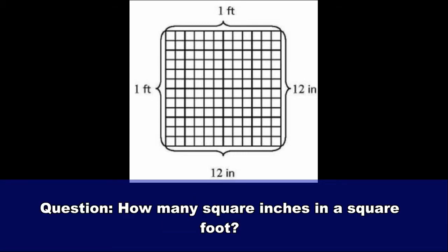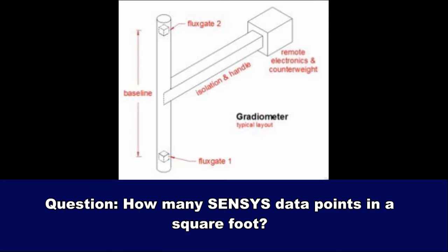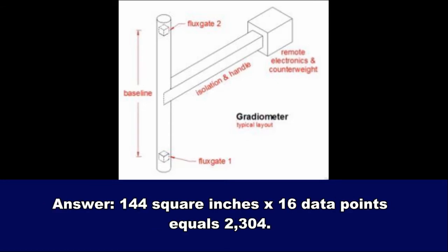Question, how many square inches in a square foot? Answer, 144. Question, how many SENSI data points in a square foot? Answer, 144 square inches times 16 data points equals 2304.